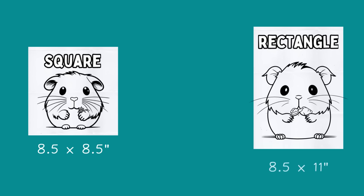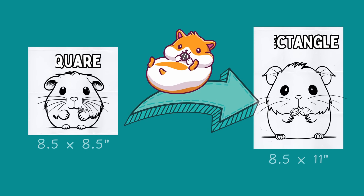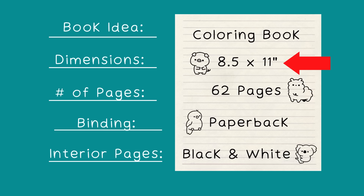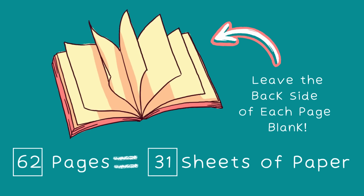In my previous coloring book tutorial, I showed you how to create a square shaped coloring book. So in today's video I'm going to change things up and show you how to create a rectangular shaped coloring book instead. The dimensions of our book will be 8.5 by 11 inches. For the number of pages, I'm going to have 62 pages, but you can choose any number. Just make sure it is at least 24 pages because that is the minimum required for Amazon KDP. When I say 62 pages, that means 31 sheets of paper because the page count takes into account both the front and back side of each page.